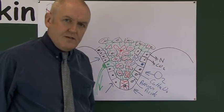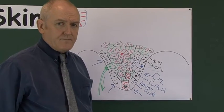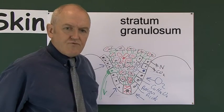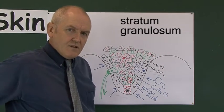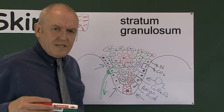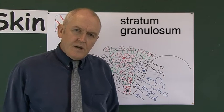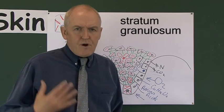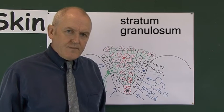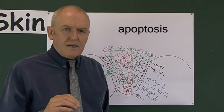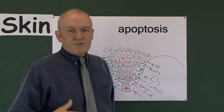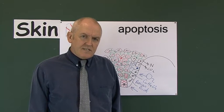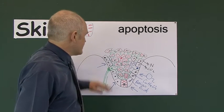As we get further from the nutrient supply in the dermis, it becomes harder for the cells to survive. When we reach the next layer — the stratum granulosum — these cells start dying. It's quite deliberate: there's a process called apoptosis, meaning programmed cell death. In apoptosis, cells die not because something is wrong but because they've been ordered to commit suicide.